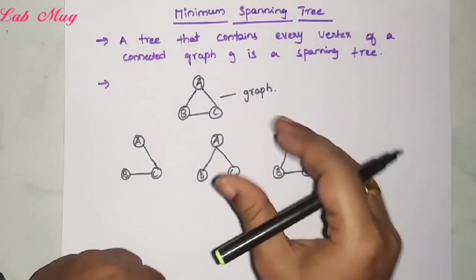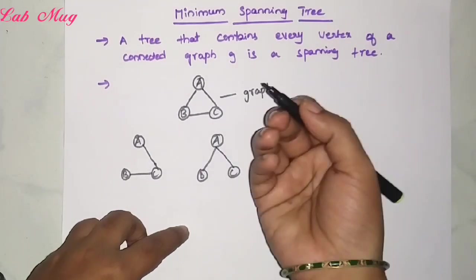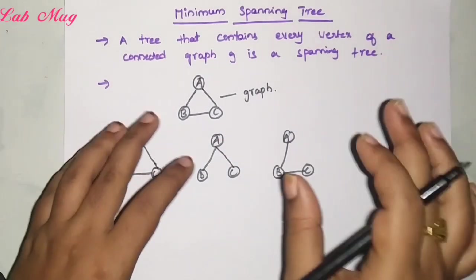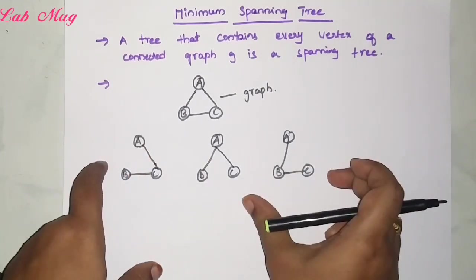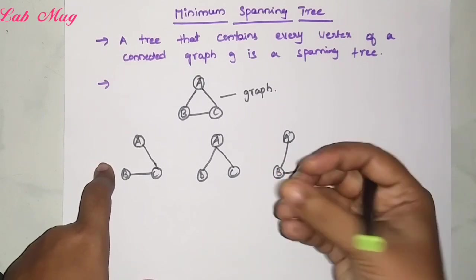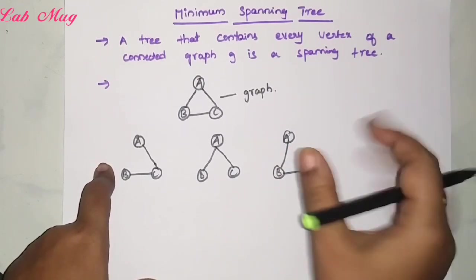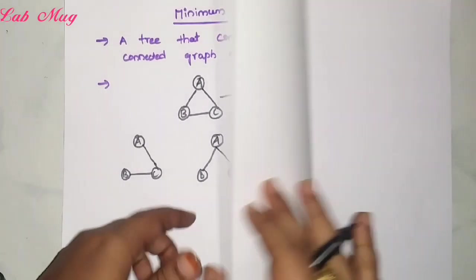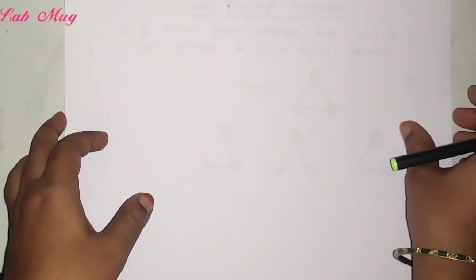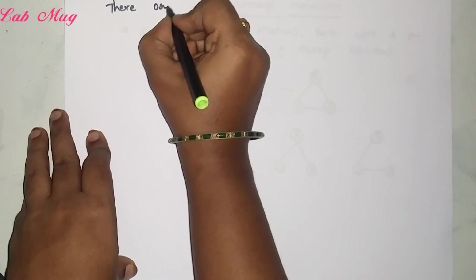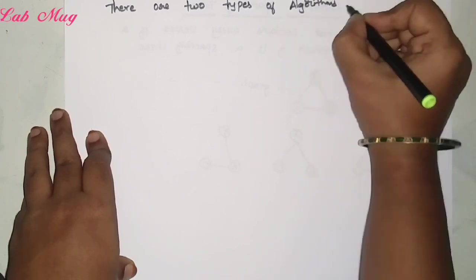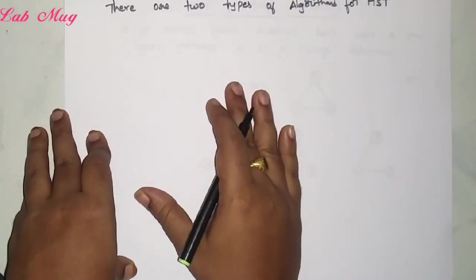Now, based on this spanning tree concept, when we take a weighted graph — the graph must be a weighted graph — from that weighted graph, based on minimum weight, we form a spanning tree without forming any connections. That is what we call a Minimum Spanning Tree. We will be abbreviating it as MST. There are two types of algorithms for MST.